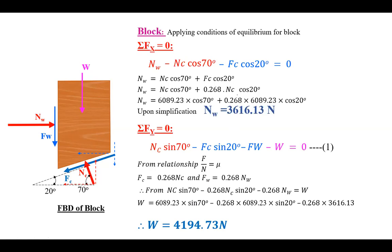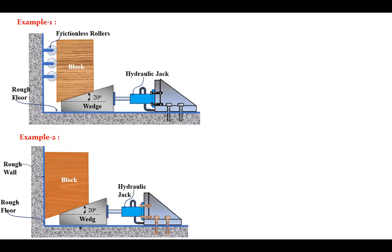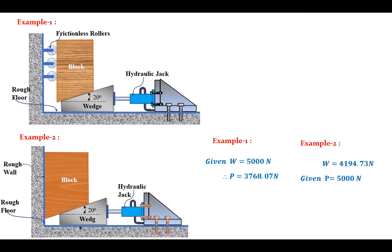So you can only lift a block of weight 4194.73 N by applying a force of 5000 N. Let us compare the two problems. In example one: W = 5000 N and the required force was P = 3768.07 N — a smaller force lifts a larger load. In example two: applying P = 5000 N lifts only W = 4194.73 N — a larger force lifts a smaller load.